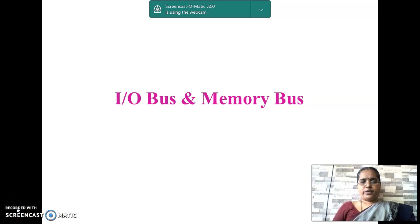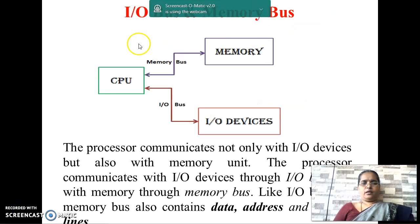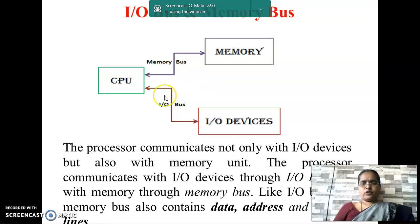The CPU is connected with the IO device through IO bus and the memory unit through memory bus. The CPU transfers data to memory through the memory bus and to IO devices through the IO bus. The memory bus also contains data lines, address lines, and control lines, similar to the IO bus.